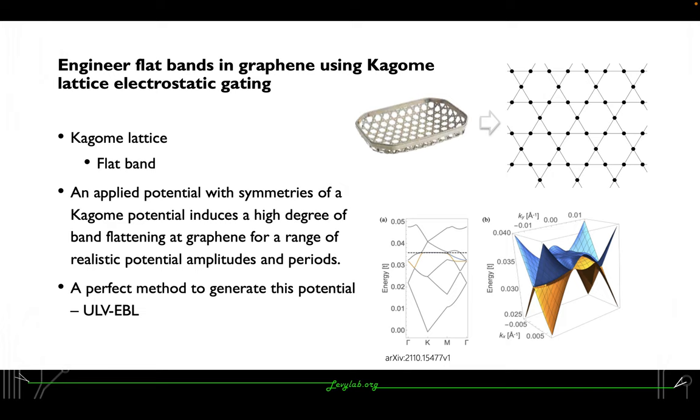Not only twisted bilayer graphene, recently there is interest in the Kagome lattice, which is initiated from a Japanese bamboo woven structure.